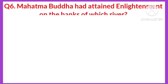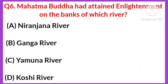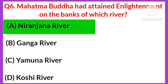Question number six: Mahatma Buddha attained enlightenment on the banks of which river? Your options are: A) Niranjana River, B) Ganga River, C) Yamuna River, D) Koshi River. The right answer is option A, Niranjana River.